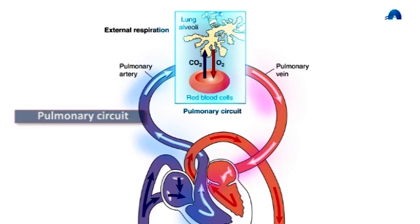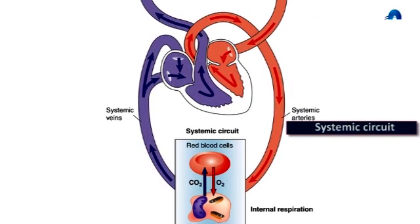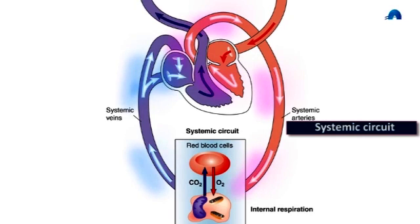The systemic circuit carries blood from the heart to the body's organs and back again. Gas exchange here is the loss of oxygen to the cells and the gain of carbon dioxide. The left side of the heart is responsible for this.